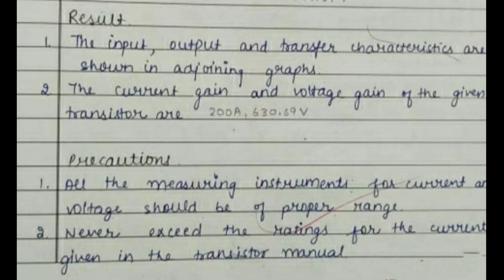This image shows the result and precautions to be taken while performing this practical. The result is very important—the input, output, and transfer characteristics are shown in the adjoining graphs. The current gain and voltage of the given transistors are 200 amperes and 630.69 volts respectively. The precautions are very important, and questions based on precautions are specially asked by the invigilators nowadays, so watch the precautions carefully.